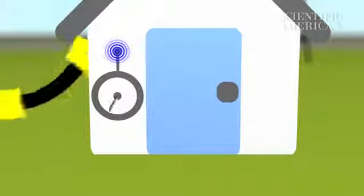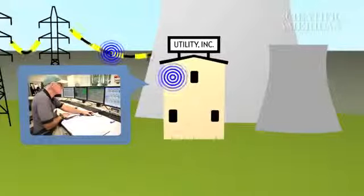Two-way communication will give both utilities and customers better information about who's using what and when. It could even let utilities do things like temporarily turn off a smart appliance in your home to help avert a blackout.